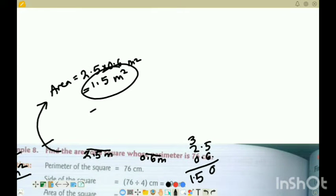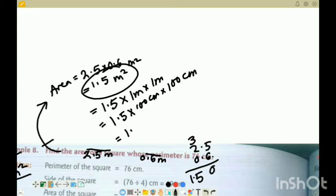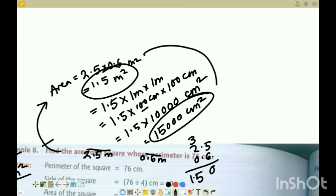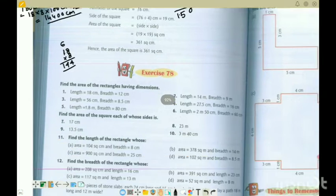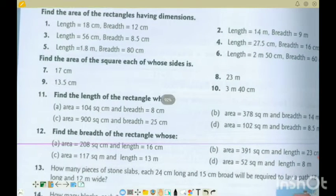We can also convert to centimeter square. Suppose this is 1.5 meter square. What do we need to do? 1.5 into 1 meter into 1 meter, which equals 1.5 into 100 centimeter into 100 centimeter. So this is 1.5 into 10,000. If we multiply by 10,000, it will be centimeter square. So this is 1.5, which becomes 15,000 centimeter square. These two units will change the value, but it will be equivalent.